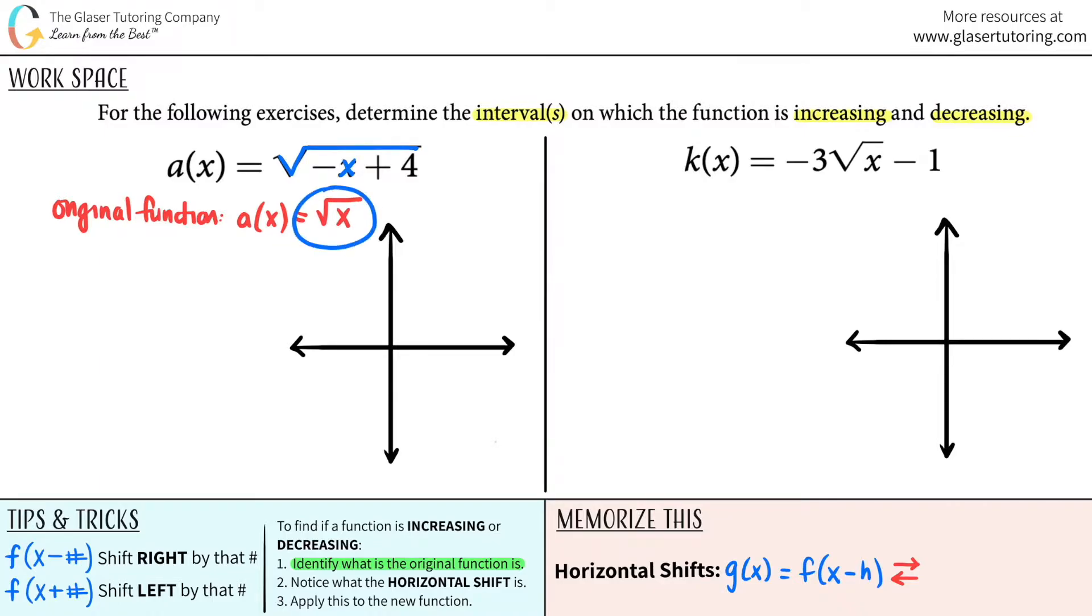So basically, your original function was a(x) equals the square root of x. And this is the function that you guys should know like the back of your hand. It's a pretty simple function. Just know that it always starts at the origin, zero zero right here, and then it only increases to the right hand side, something like this. That is your graph of just the square root of x. There are no negative values for your x here.